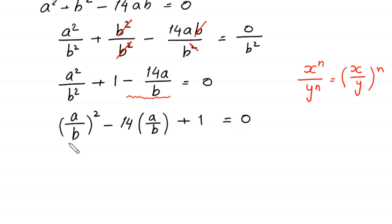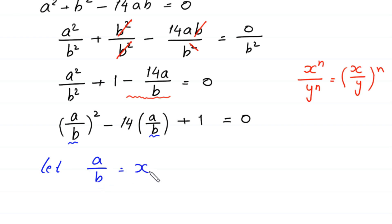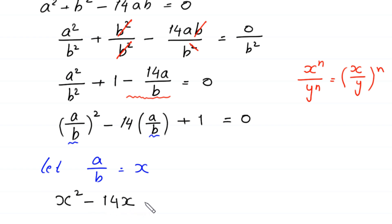Now here we have a over b repeated, so we suppose that a over b is equal to x, and we substitute x into this equation. The equation then becomes x squared minus 14x plus one equals zero.